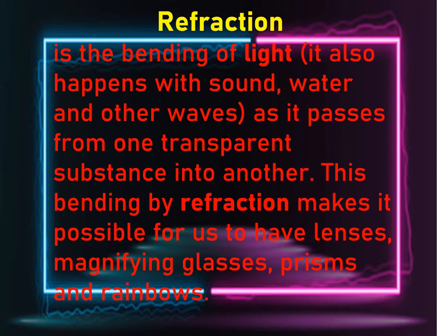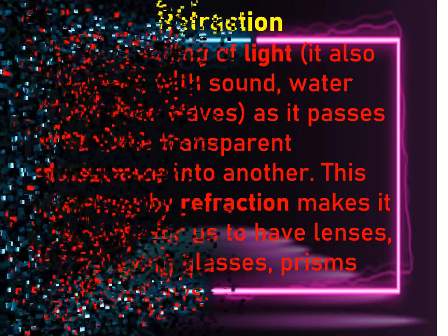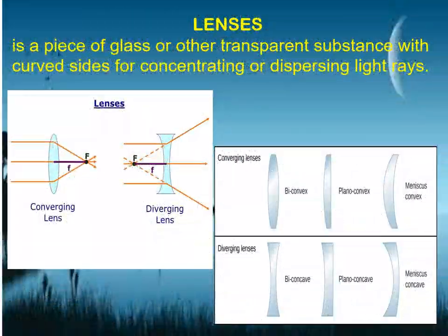When we say refraction, it is the bending of light. It also happens with sound, water, and other waves as they pass from one transparent substance into another. This bending by refraction makes it possible for us to have lenses, magnifying glasses, and prisms. A lens is a piece of glass or other transparent substance with curved sides for concentrating or dispersing light.